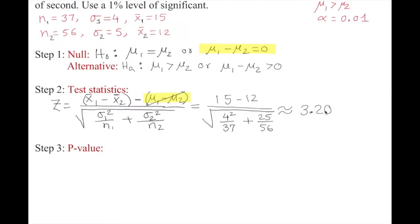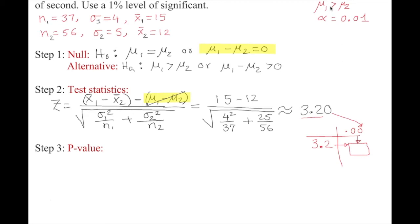Next we need the p-value. Since our test statistic is z, we go to the z-table. Because μ₁ > μ₂ is a right-tailed test, we draw a bell curve and identify the right tail. We look up z = 3.2 in the z-table.